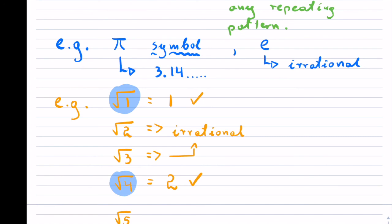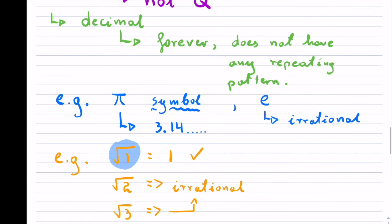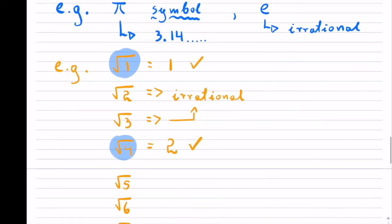Now, we can't know all the irrationals, but we know the characteristic. The characteristic is that it's a decimal that goes on forever and does not have any repeating patterns. And these are kind of some of the common ones. So hopefully you found this useful. Thank you for watching.